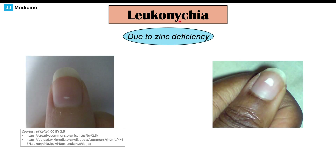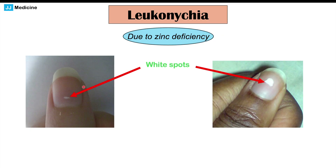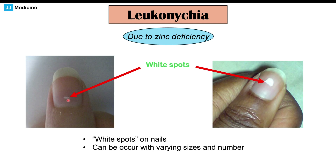Another potential nail finding is leukonychia, which is due to a zinc deficiency. We can get a zinc deficiency in celiac disease as well. Leukonychia presents as little white spots on the nail — they can be multiple spots of varying sizes, and they are often found on multiple nails, not just one. This can be another finding seen in some patients with celiac disease.